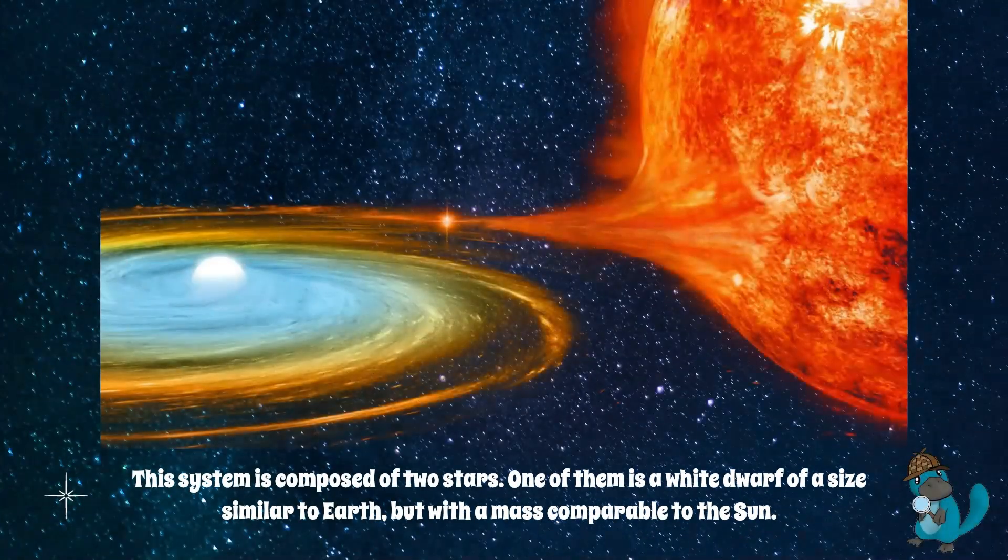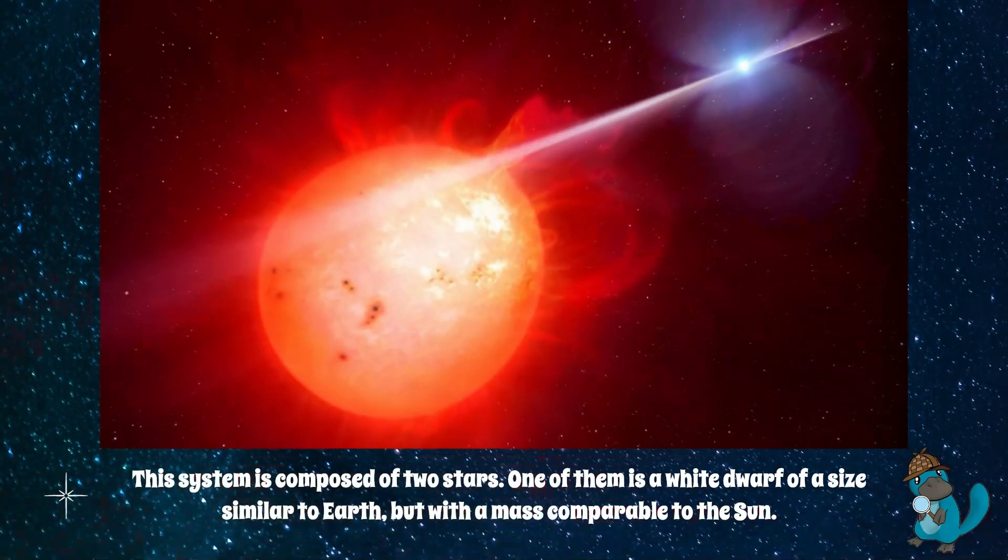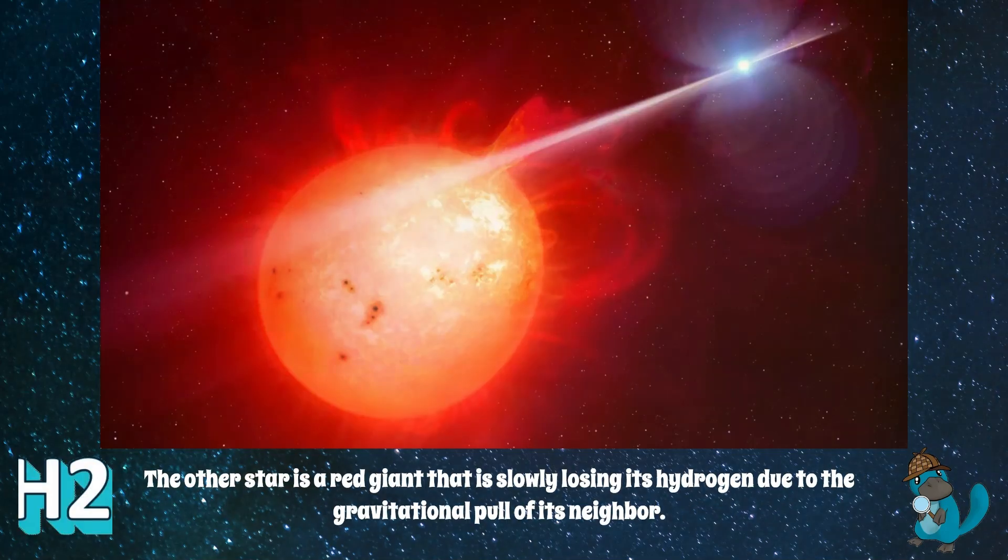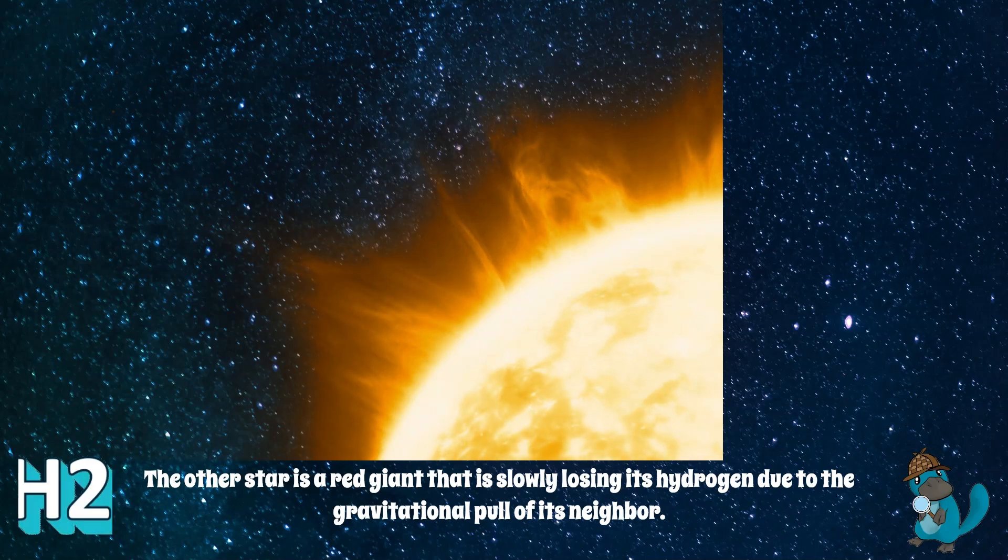This system is composed of two stars. One of them is a white dwarf of a size similar to Earth, but with a mass comparable to the Sun. The other star is a red giant that is slowly losing its hydrogen due to the gravitational pull of its neighbor.